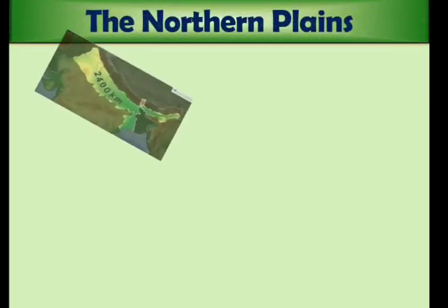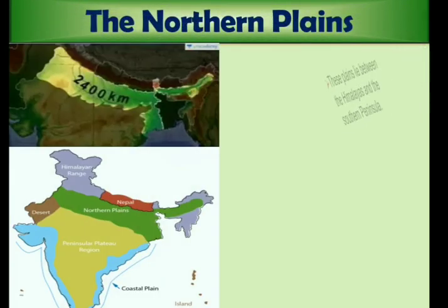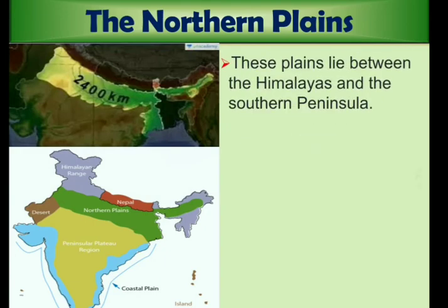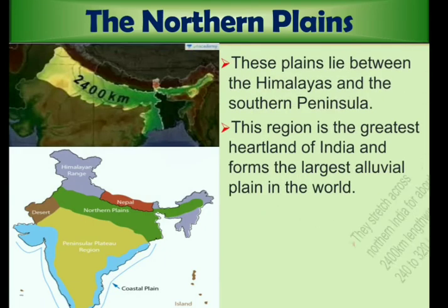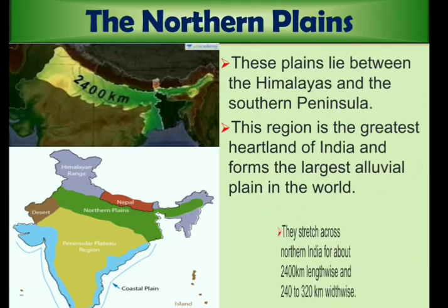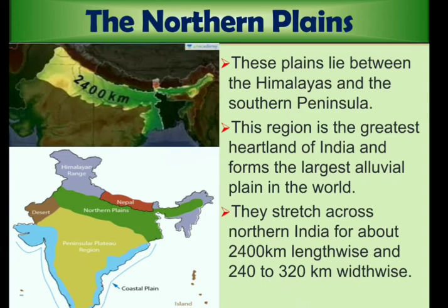Next we have the northern plains. These plains lie between the Himalayas and the southern peninsula. This region is the greatest heartland of India and forms the largest alluvial plain in the world. It stretches across northern India for about 2400 km lengthwise and 240–320 km widthwise.